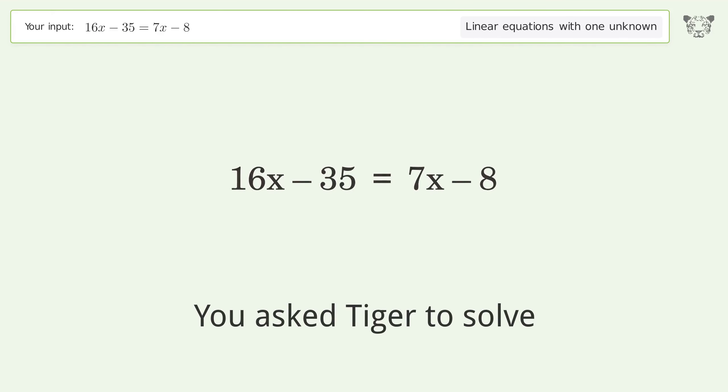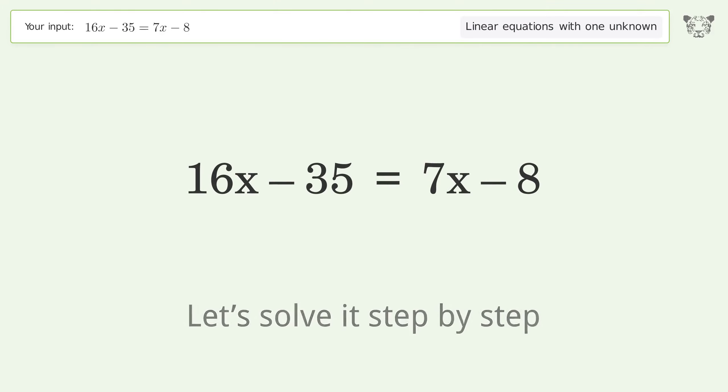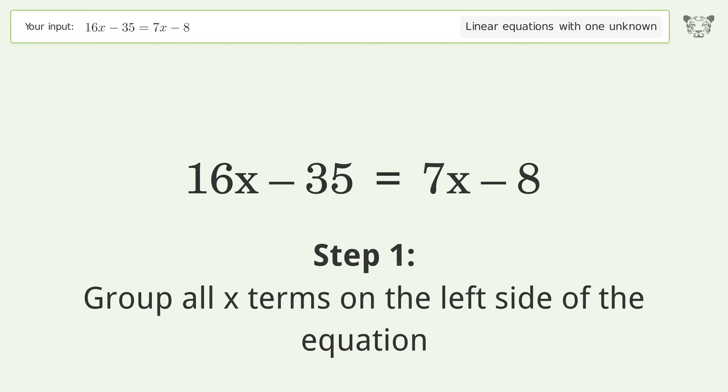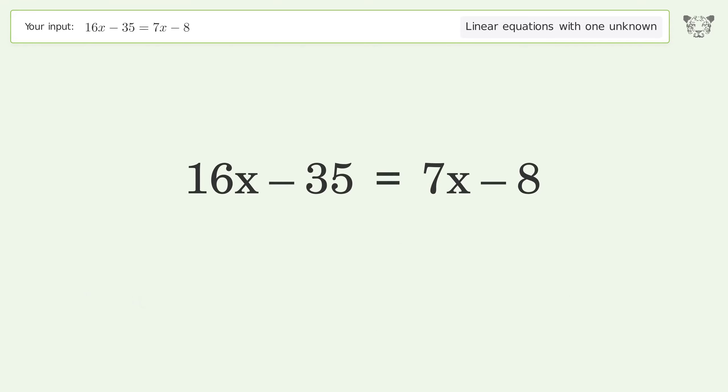You ask Tiger to solve this. This deals with linear equations with one unknown. The final result is x equals 3. Let's solve it step by step. Group all x terms on the left side of the equation. Subtract 7x from both sides.